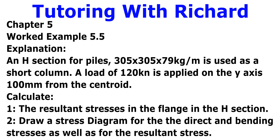A 305 by 305 by 79 kg per meter H-section is used as a short column. A load of 120 kN is applied on the y-axis, 100 mm from the centroid. We have to calculate: first, the resultant stress at the flanges of the H-section; and second, draw the stress diagram for the direct and bending stress as well as for the resultant stress.